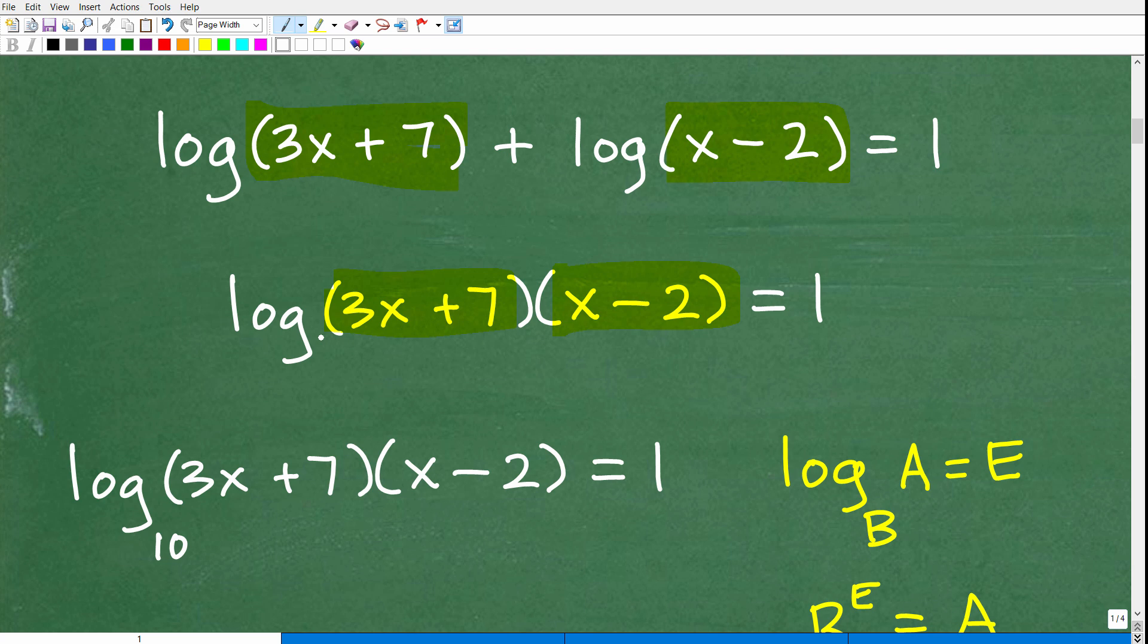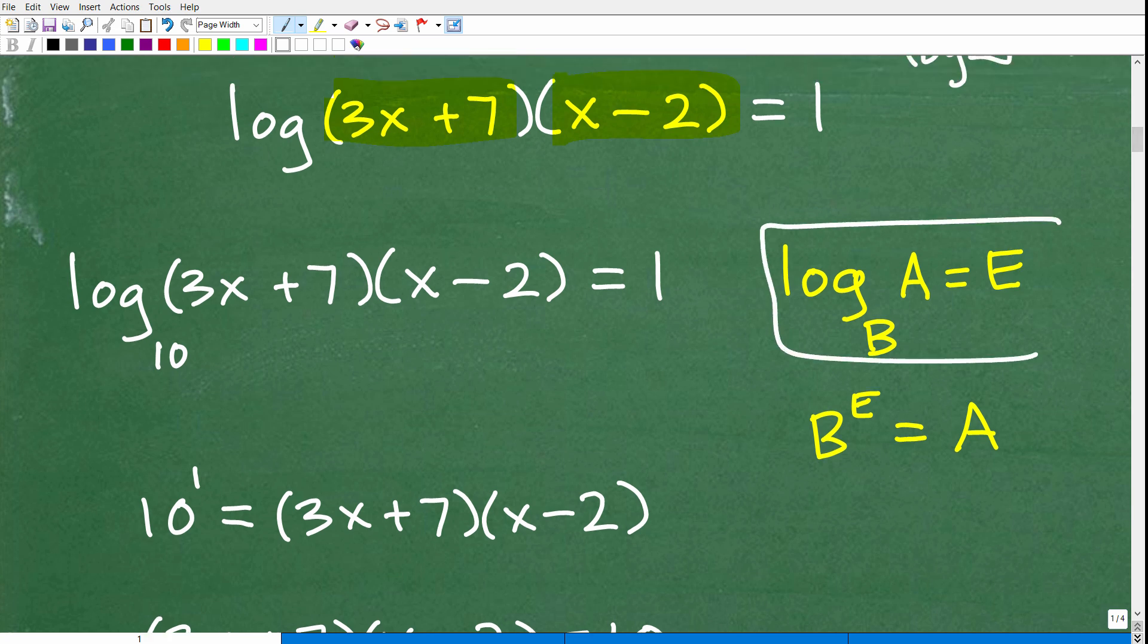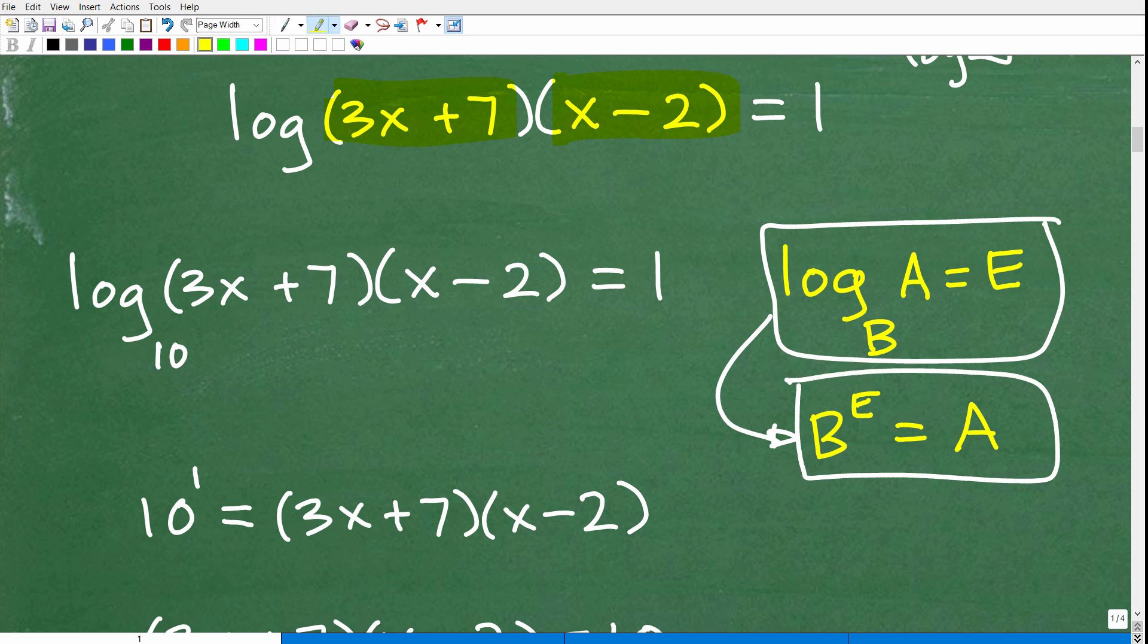Now, when you're dealing with a logarithmic equation, once you have your log part all by itself equaling a number, now you're at the stage where you can rewrite this logarithmic expression or equation as a power. So the base exponent is going to be equal to your answer. So let's see how that is done now.